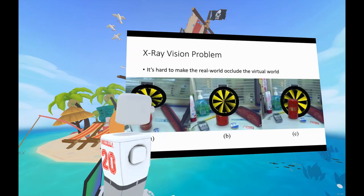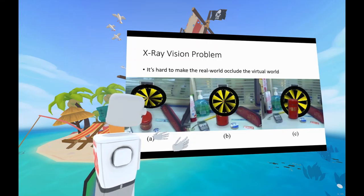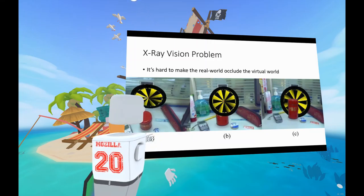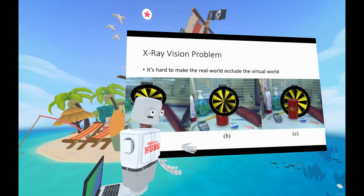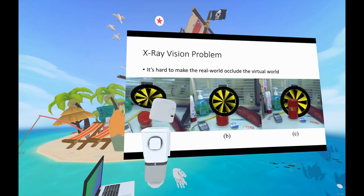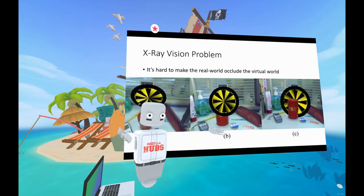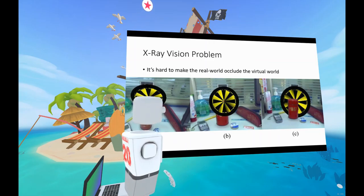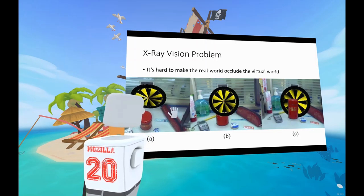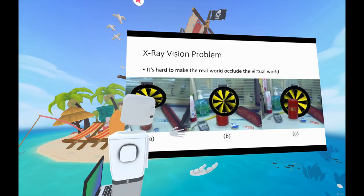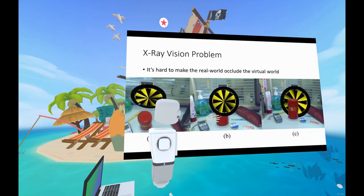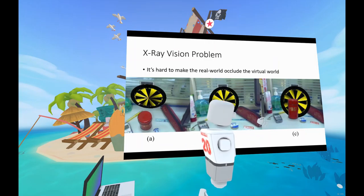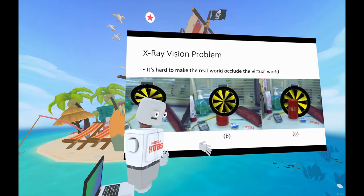Sometimes you want the real world to occlude virtual objects. Occlusion is actually a problem because for the real world to occlude the virtual world, you have to know where objects in the physical world are — which requires knowing the real world in 3D. That's hard to do unless you have something scanning the world around you or have the geometry already plugged in. The x-ray vision problem is summarized like this: unless you know something about the physical world, your virtual content will almost always be drawn on top of physical elements, unless you use something like a depth scanner — like the Kinect — to figure out where real-world objects are relative to the depth of the virtual objects.